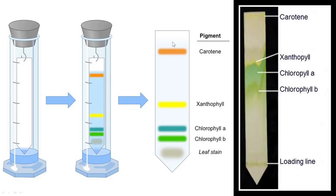Carotene has moved the furthest on the paper. The order from the loading line is: carotene moves the furthest, followed by xanthophyll, then chlorophyll A, and then chlorophyll B. From the loading line, the distance each pigment travels is how the separation is measured. This is how you separate the mixture of plant pigments using the paper chromatography method.